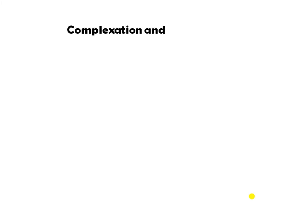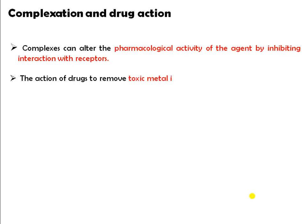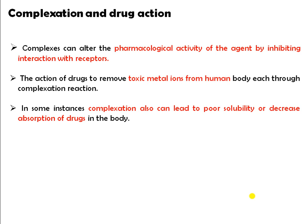Welcome friends. Today we are going to discuss complexation and drug action — how complexation affects drug action — and the thermodynamic treatment of the stability constant of the complexation process. First, we'll discuss how complexation affects drug action. Complexation can alter the pharmacological activity of agents by inhibiting their interaction with receptors, interfering with drug-receptor binding, which causes pharmacological activity to change.